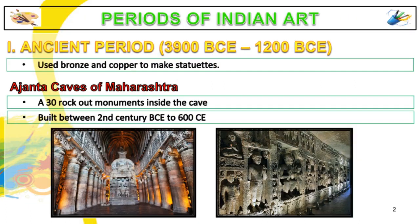Periods of Indian Art — Ancient Period, 3900 BCE to 1200 CE. Some evidences of the early civilization are bronze and copper statuettes and steatite seals, which show vigor and concern for surface texture as constantly characterized in Indian art. The Ajanta Caves of Maharashtra, India are 30 rock-cut cave monuments that date back from the 2nd century BCE to 600 CE, including paintings and sculptures considered to be masterpieces of Buddhist religious art, as well as frescoes that are reminiscent of the Sigiriya paintings in Sri Lanka.